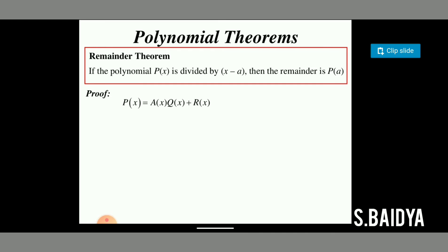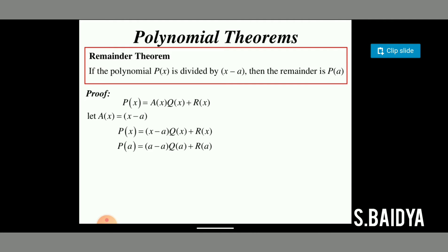The theorem states that if p(x) is divided by x minus a, then a(x) is x minus a. Let us substitute a(x) = x minus a in the above relation: p(x) = (x − a) · q(x) + r(x). Now if we put x = a, we have p(a) = (a − a) · q(a) + r(a). The first term contains the factor (a − a), which equals 0.